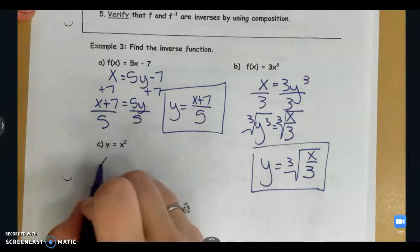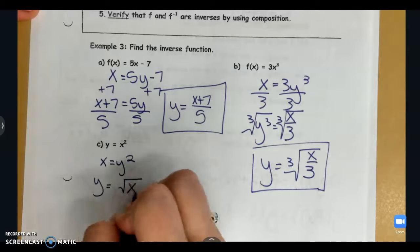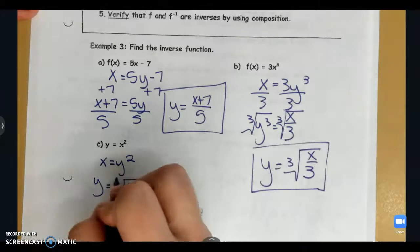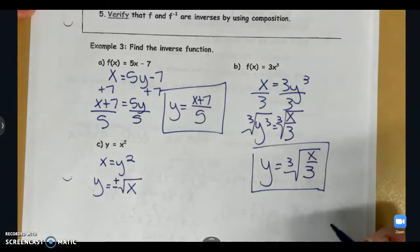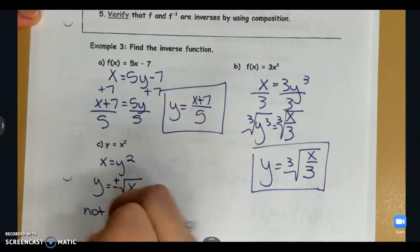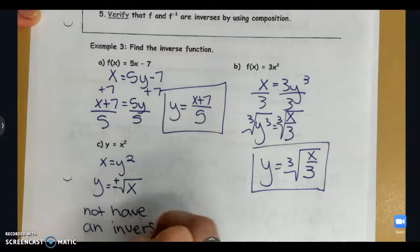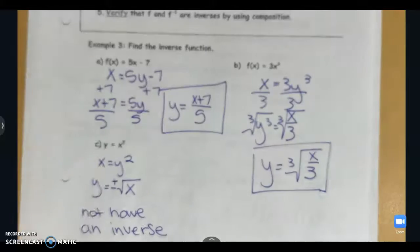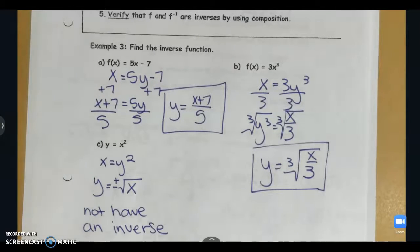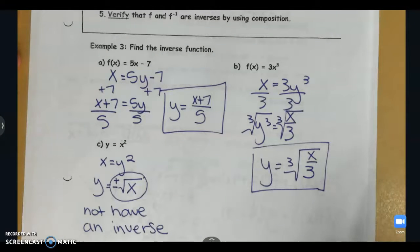Then part c, I swap my x's and my y's and I get that y is equal to the square root of x. Now remember when we take the square root it's positive or negative. Now I can't have two inverse functions, so that means that this function x squared does not have an inverse. There is no inverse for that function. And on the next page we're going to talk about how we would know that graphically. But for now, if I end up with two possible answers for my inverse function, there is no inverse function because this is not a function. It would fail the vertical line test.